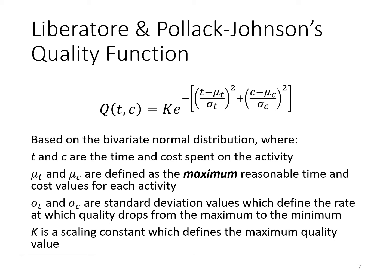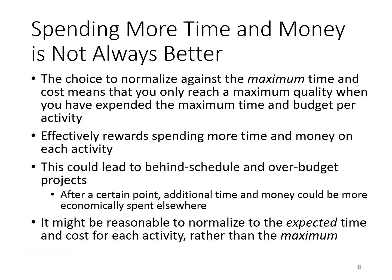Based on these criteria, Liberatore and Pollack-Johnson created a quality function based on the bivariate normal distribution. This function is based on the time and cost spent on the activity, the maximum reasonable time and cost values for each activity, the standard deviations which define the rate at which quality drops from a maximum to a minimum, and a scaling constant which defines the maximum quality value. Their quality function normalizes against the maximum time and cost for each activity, meaning you can only reach the maximum quality once you've expended the maximum time and budget per activity.